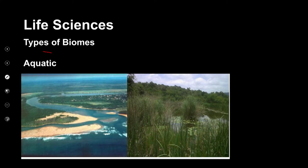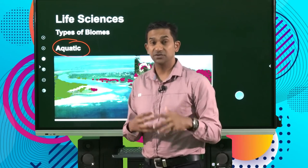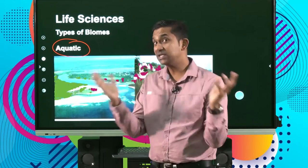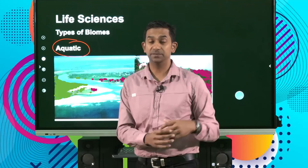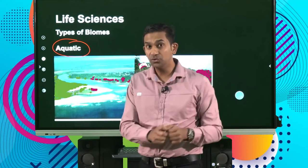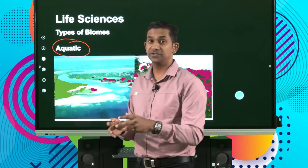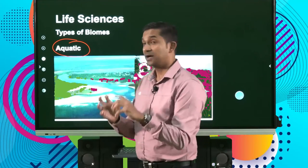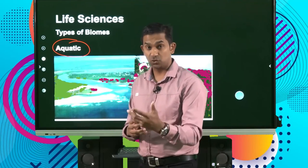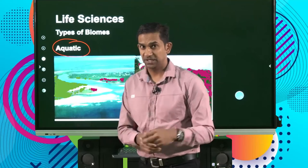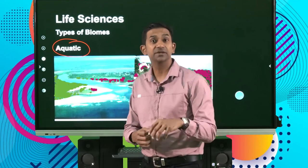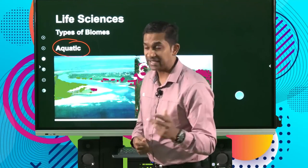Aquatic biomes refer to the biomes based on the availability of water in an area. Broadly speaking, aquatic biomes can either be freshwater biomes or marine biomes. Marine biomes have salt water, while freshwater biomes are those found in rivers, dams, and lakes.